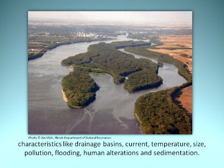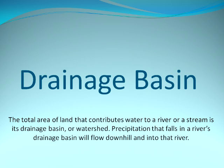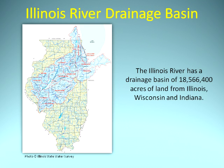Drainage Basin: The total area of land that contributes water to a river or a stream is its drainage basin or watershed. Precipitation that falls in a river's drainage basin will flow downhill and into that river. The Illinois River has a drainage basin of 18,566,400 acres of land from Illinois, Wisconsin, and Indiana.